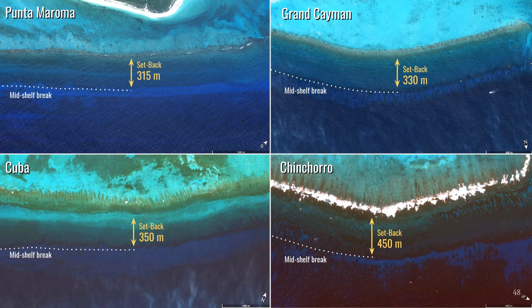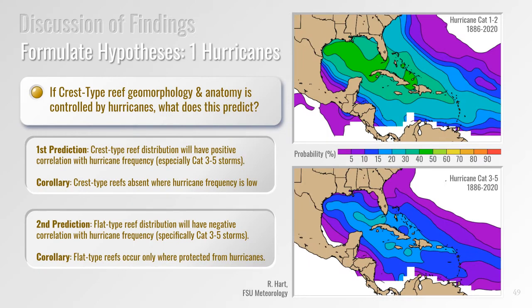But how do we know that this retrograde accretion model applies to other crest-type reefs in the Caribbean? If you look at the setback distance between the mid shelf slope break and the crest line on different reefs around the Caribbean, it's a constant distance of between 300 to 400 meters — the same as Punta Maroma. This implies that hurricane waves control the position of crest-type reefs by transporting coral clasts a similar distance upslope from the mid shelf slope break in all areas. So in addition to differences in morphology and distribution, crest-type and flat-type reefs also have different internal structures.